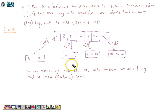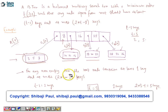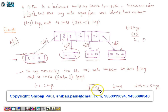A B-tree is a balanced multi-way search tree with a minimum degree called T, such that any node apart from the root should have at least T minus one keys and at most two T minus one keys. For the root node, it should have a minimum of one key and a maximum of two T minus one keys. T is an integer which should not be less than two.